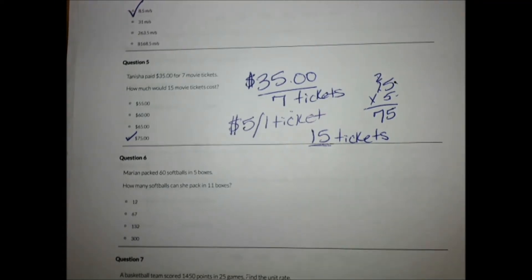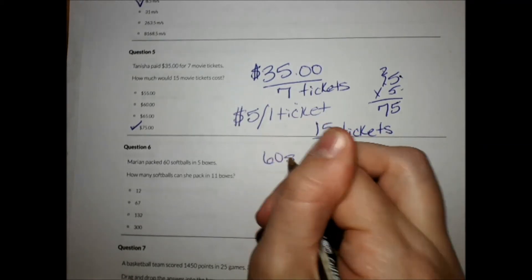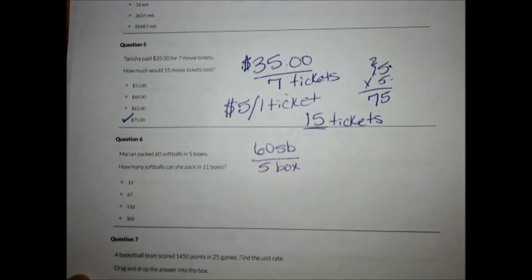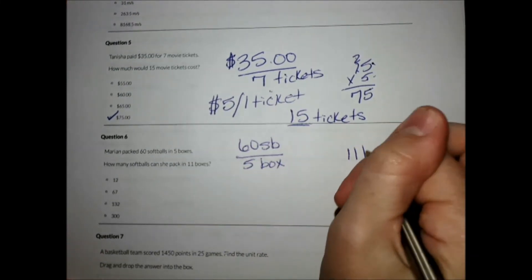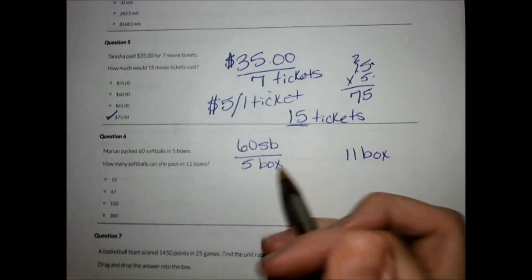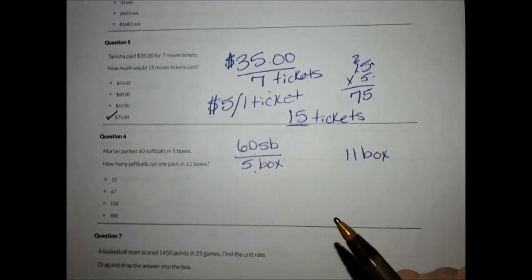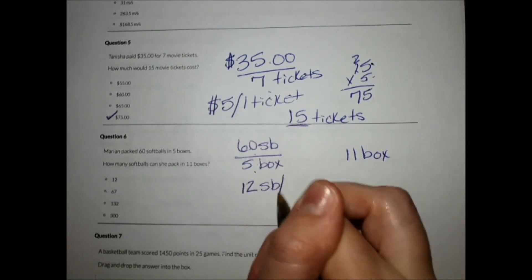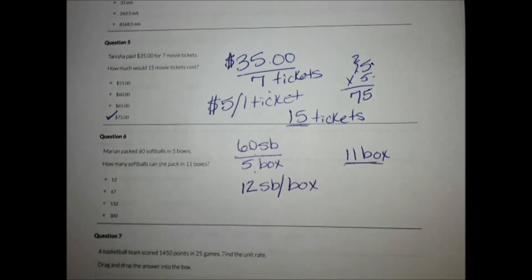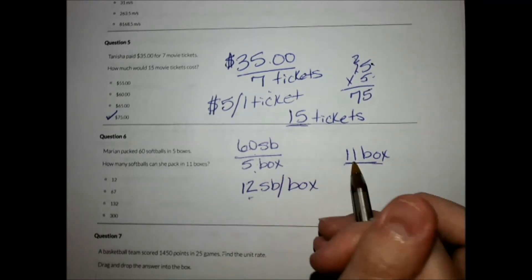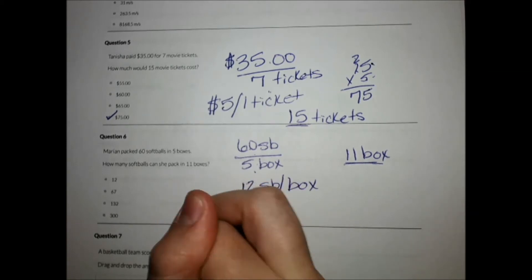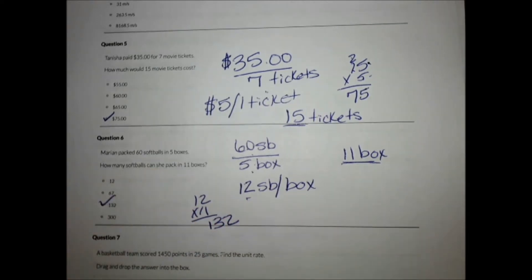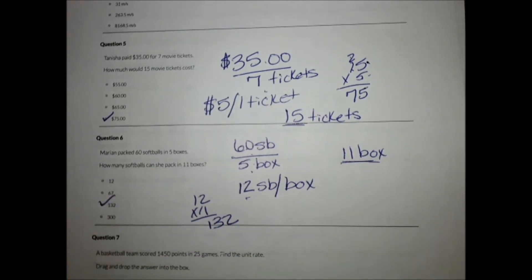Number six. Marion packed 60 softballs in five boxes. How many can she fit in 11 boxes? So I'm going to say, how many can she fit in one? 60 divided by 5 does give me 12 softballs per box. And I've got 11 boxes, so I'm going to multiply 12 by 11. You know your multiplication tables there, and you get 132. So 132 softballs in 11 boxes.